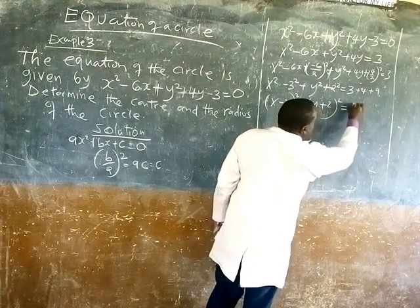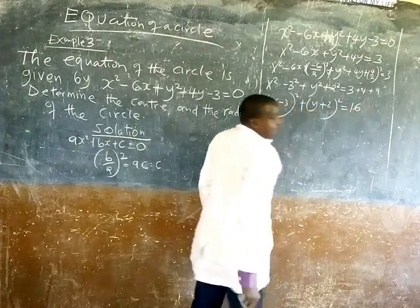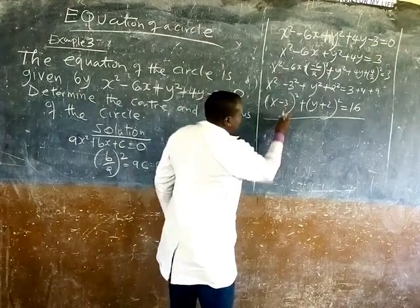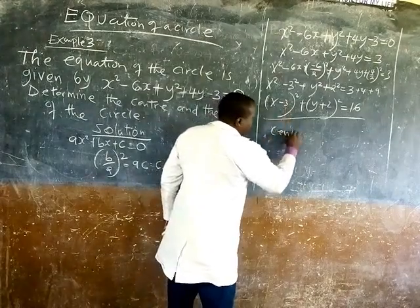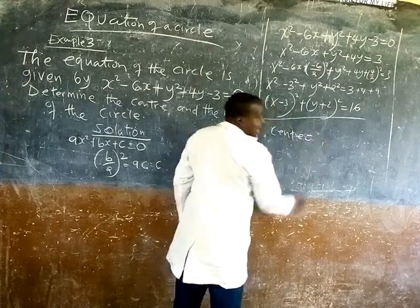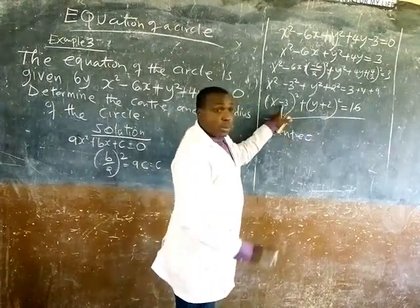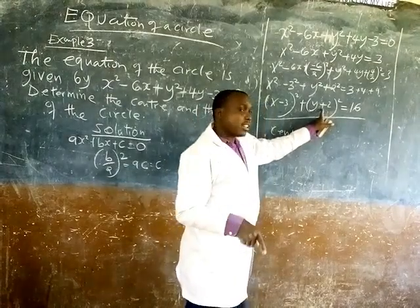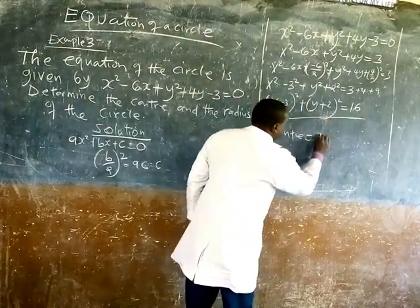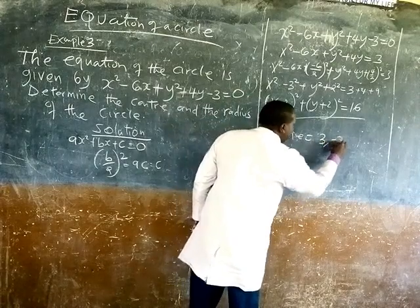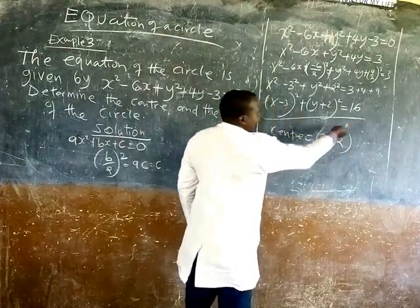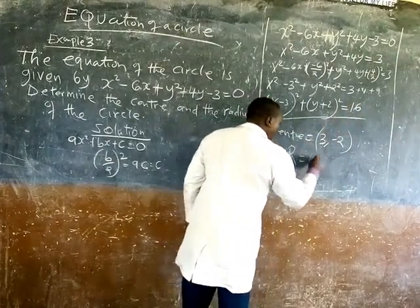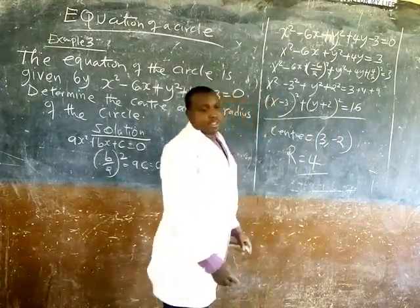So this one is going to be the center is 3, negative 2. And what is the radius? The radius is equal to 4.